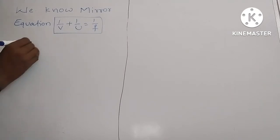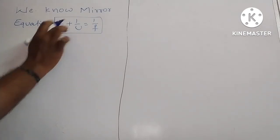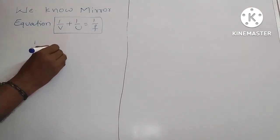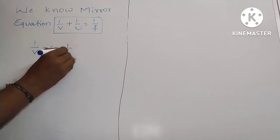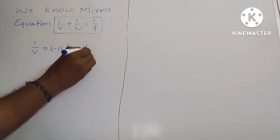Just I will tell you a shortcut trick. So 1 by v equal to, if you write that side, minus 1 by u plus 1 by f.